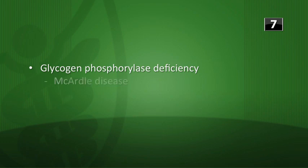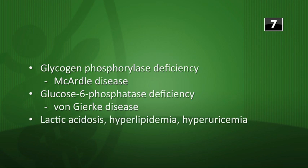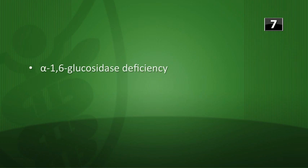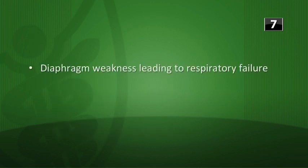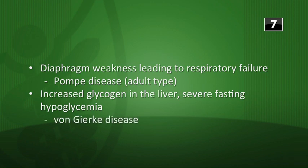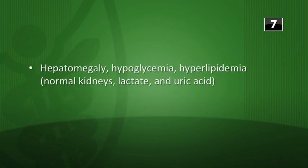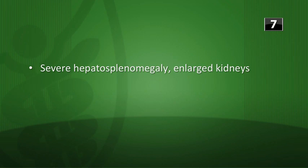Matching glycogen storage diseases: glycogen phosphorylase deficiency is McArdle disease; glucose-6-phosphatase deficiency with lactic acidosis, hyperlipidemia, and hyperuricemia is Von Gierke disease; alpha-1,6-glucosidase (debranching enzyme) deficiency is Cori disease; alpha-1,4-glucosidase deficiency is Pompe disease. Cardiomegaly is Pompe infantile type; diaphragm weakness and respiratory failure is adult Pompe. Increased glycogen in liver with severe fasting hypoglycemia is Von Gierke. Hepatomegaly and hypoglycemia but normal lactate and uric acid is Cori disease. Painful muscle cramps and myoglobinuria with exercise is McArdle disease; severe hepatosplenomegaly with enlarged kidneys is Von Gierke.